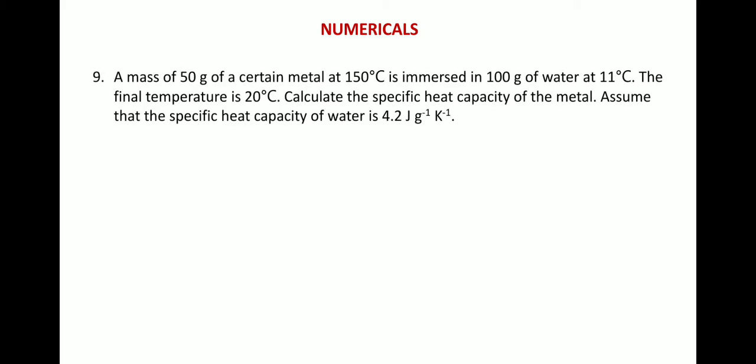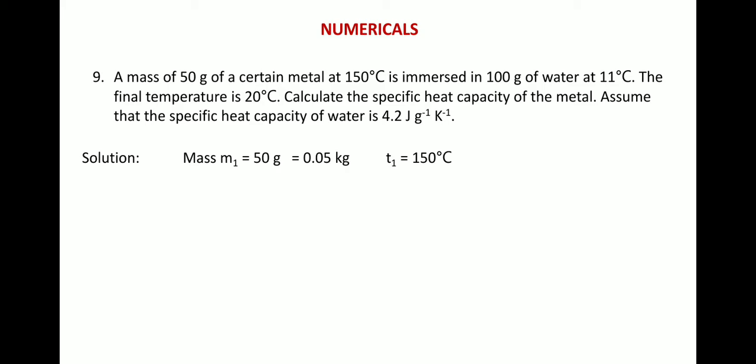Question 9: A mass of 50 grams of a certain metal at 150 degrees Celsius is immersed in 100 grams of water at 11 degrees Celsius. The final temperature is 20 degrees Celsius. Calculate the specific heat capacity of the metal. Assume specific heat capacity of water is 4.2 joules per gram per Kelvin. Data: M1 = 50 grams = 0.05 kg (metal), T1 = 150°C.